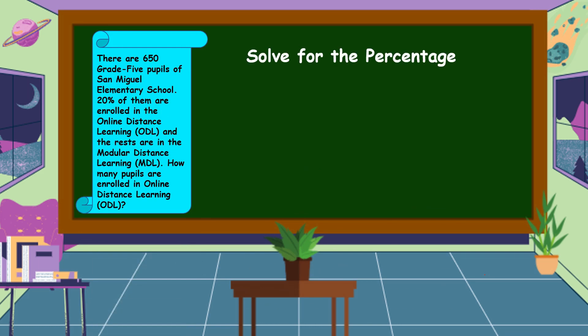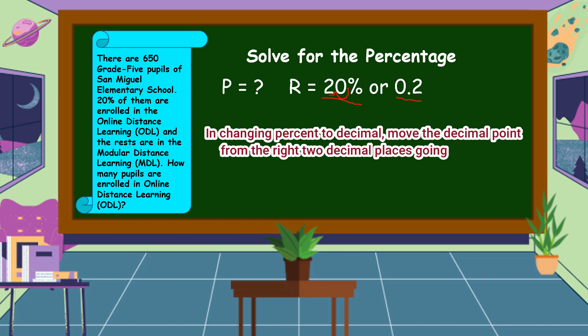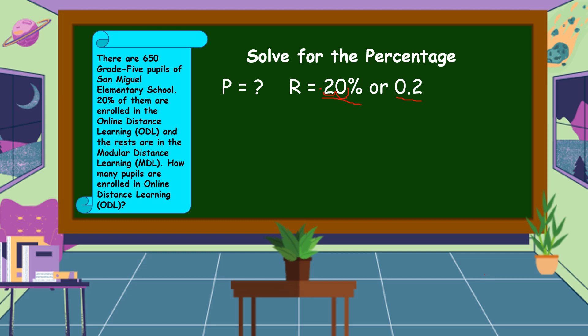To answer this problem, we are going to solve for the percentage. Percentage is unknown. Rate is equal to 20% or 2 tenths. Always remember that you should change percent to decimal. In changing percent to decimal, just move the decimal point from the right two decimal places going to the left, then put the decimal point. Then you can omit zero and the percent sign. So, 20% is equal to 2 tenths.